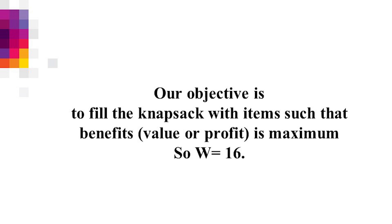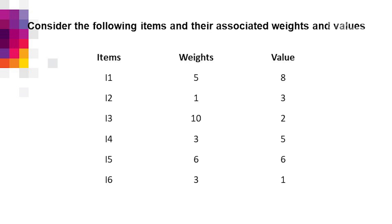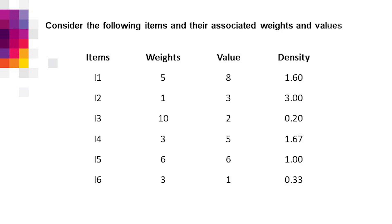We draw a table of items, their weights, and respective values. Then we compute the density, which is value divided by weight. The densities are: i1 = 1.6, i2 = 3, i3 = 0.2, i4 = 1.67, i5 = 1, and i6 = 0.33.